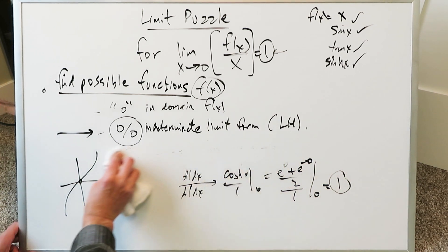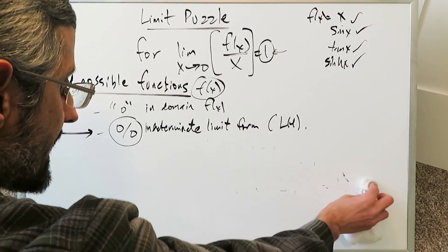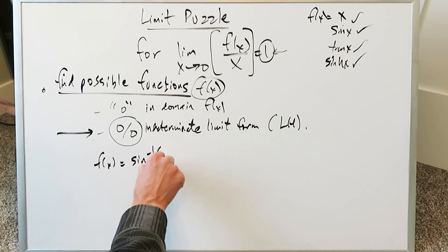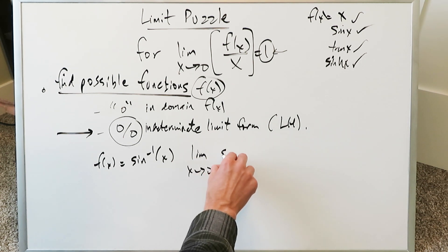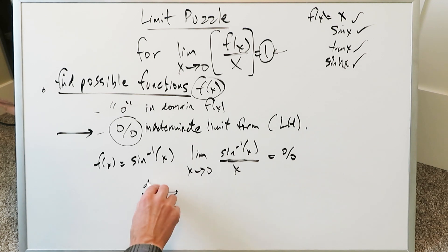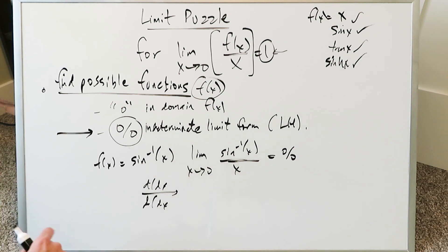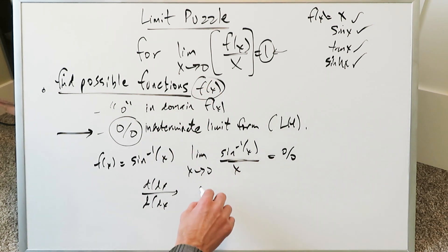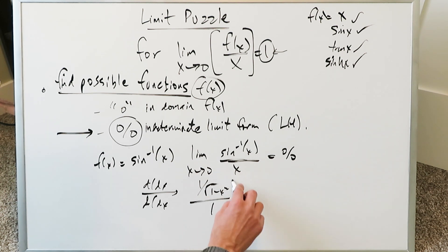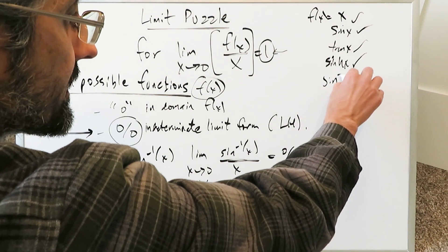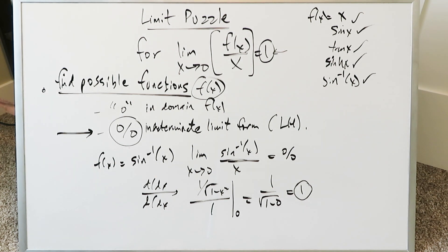Think about curves that go through the origin because 0 is in their domain and that lead to an indeterminate limit form. How about f(x) = arcsin x? The limit becomes arcsin x / x. Placing 0 gives arcsin(0) = 0, so 0/0. Applying L'Hôpital's rule: the derivative of arcsin x is 1/√(1−x²), and derivative of x is 1. Plugging in 0: 1/√(1−0) = 1. So arcsin x satisfies the limit as well, and it passes through the origin.